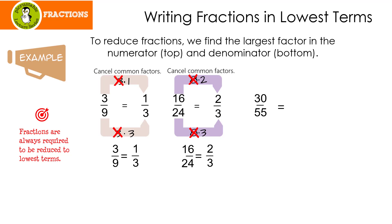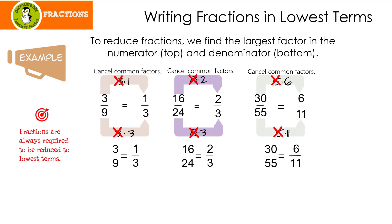Let's look at the last one: 30 over 55. When I think of 30, I think of 5 times 6. Does 5 go into 55? It sure does — 5 times 11. Does 6 go into 55? Nope, that's why I didn't use it. I'm going to cancel my common factors and I end up with 6 over 11. That means that 30 over 55 reduces to 6 elevenths.